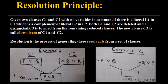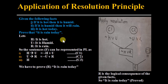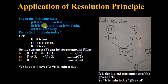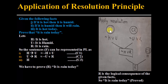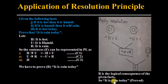Here is an example of how to apply the resolution principle. Given the facts: if it is hot then it is humid (H implies U), if it is humid then it will rain (U implies R), and it is hot today (H) — prove that it will rain today. We represent these as clauses. Applying resolution on C1 and C2 gives NOT H OR R. Applying resolution on this resolvent with C3 gives R. Therefore, R is the logical consequence of the given facts — it will rain today.